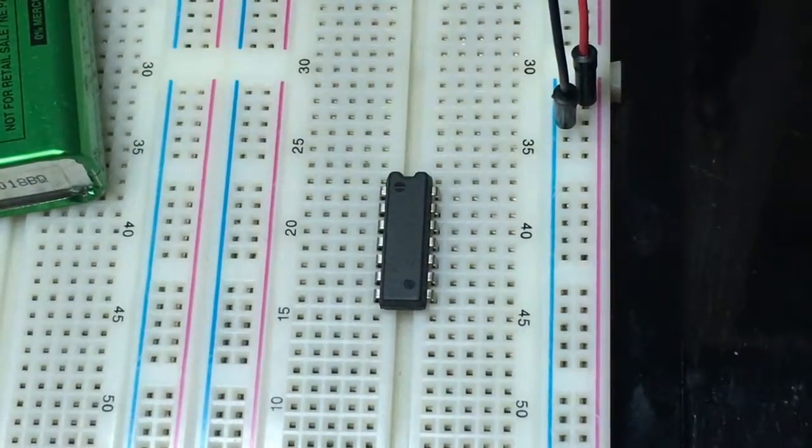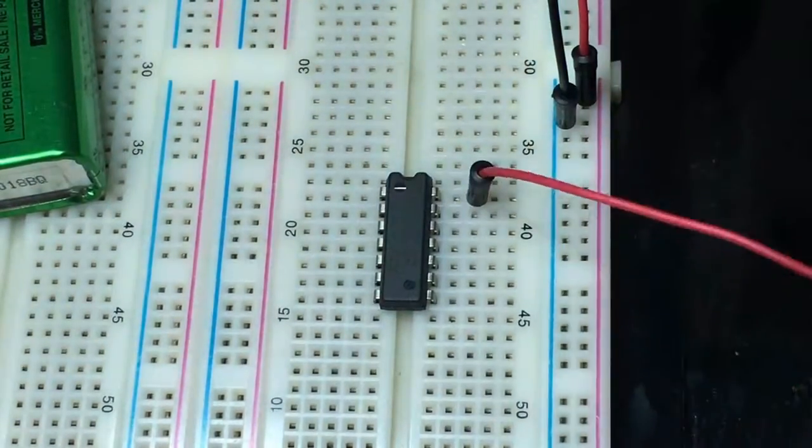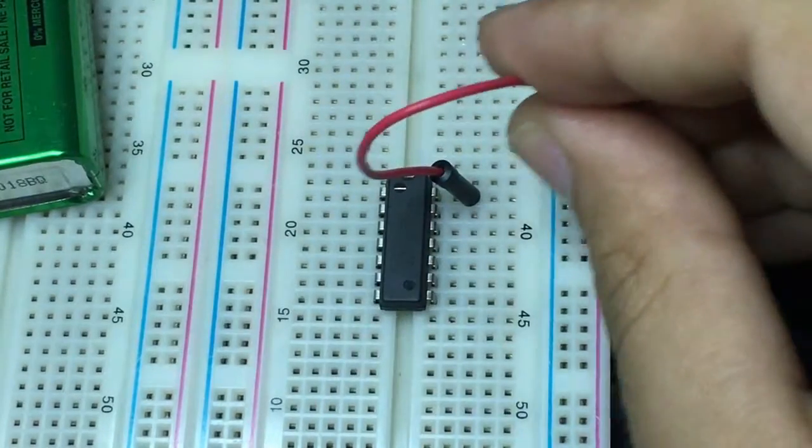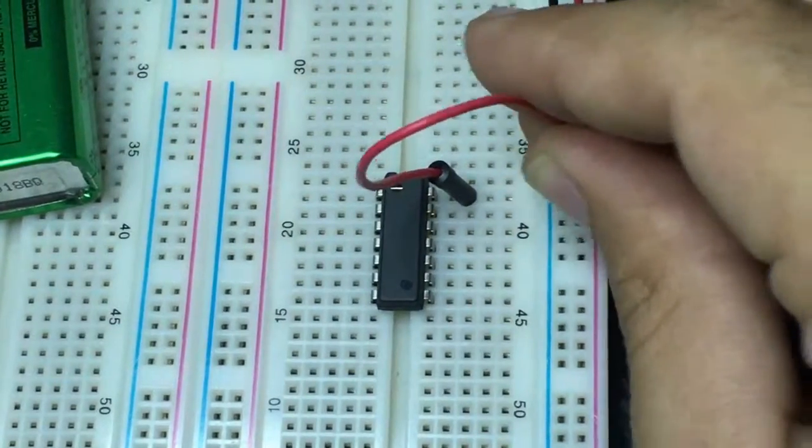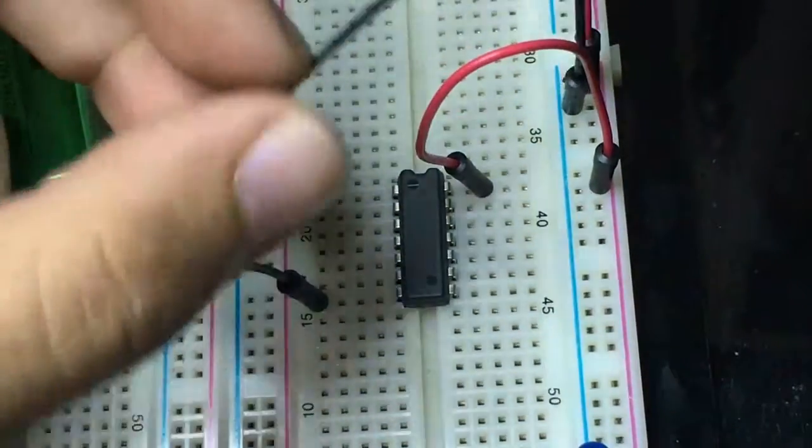Okay, so let's connect pin number fourteen to the VCC and pin number seven to the ground.